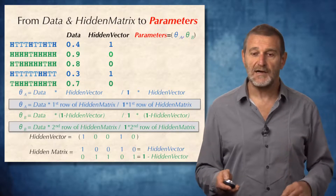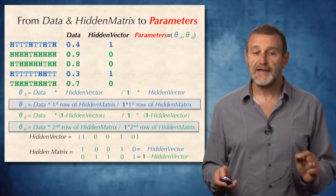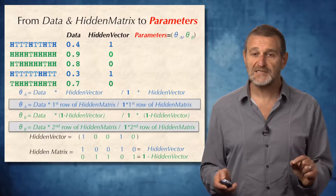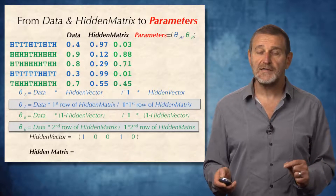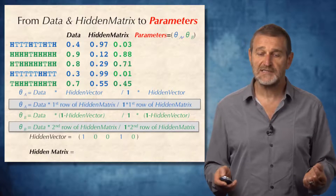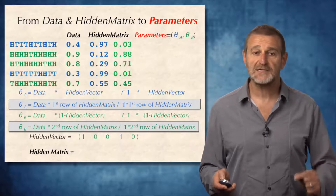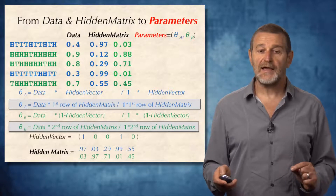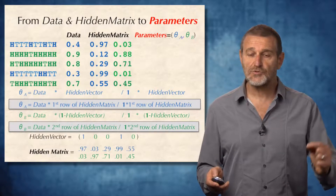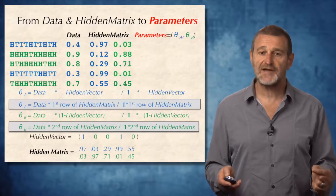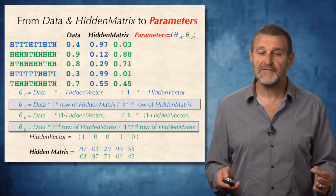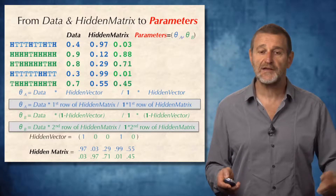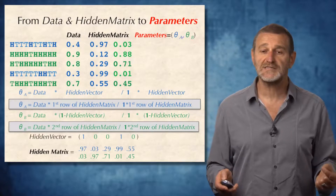Divided by the corresponding expression on the right, of course. After we figure out how to compute the biases of coins through the hidden matrix, we can compute the entire hidden matrix shown here. We now accomplish this task, moving from the hidden matrix and data to parameters. This approach works for the simple hidden matrix based on a binary vector derived from the hidden vector, but whatever the rows of the hidden matrix are, we can use the same formulas shown in the boxes on this slide.